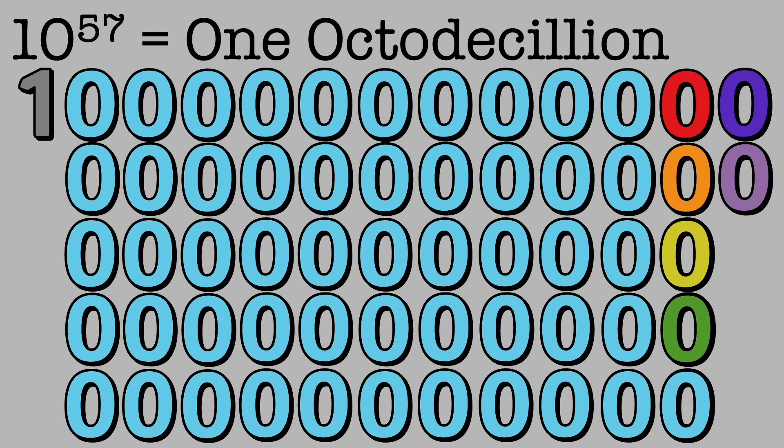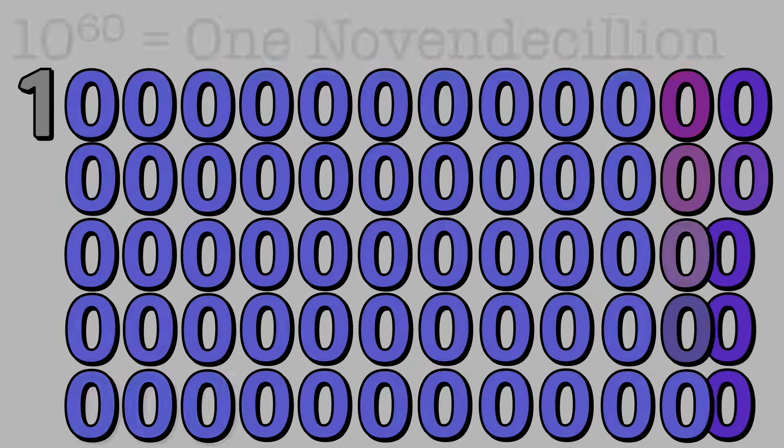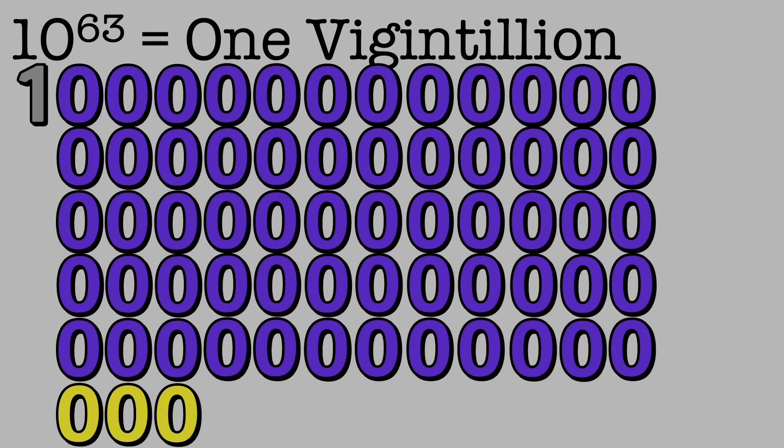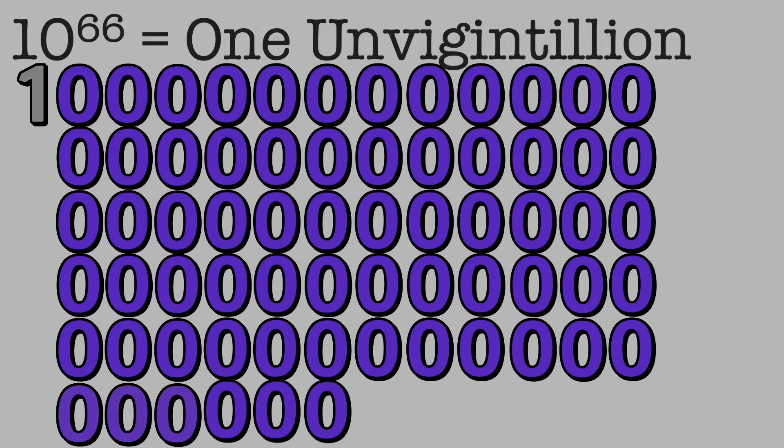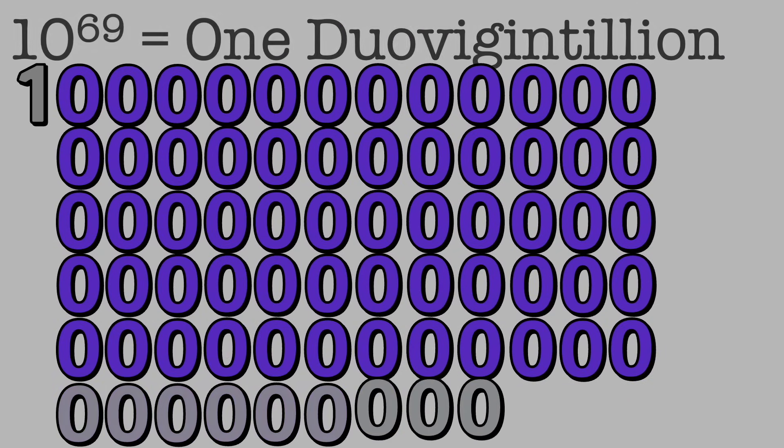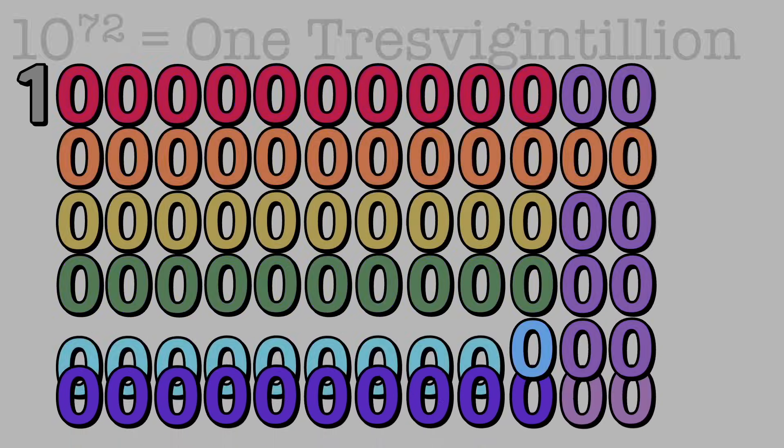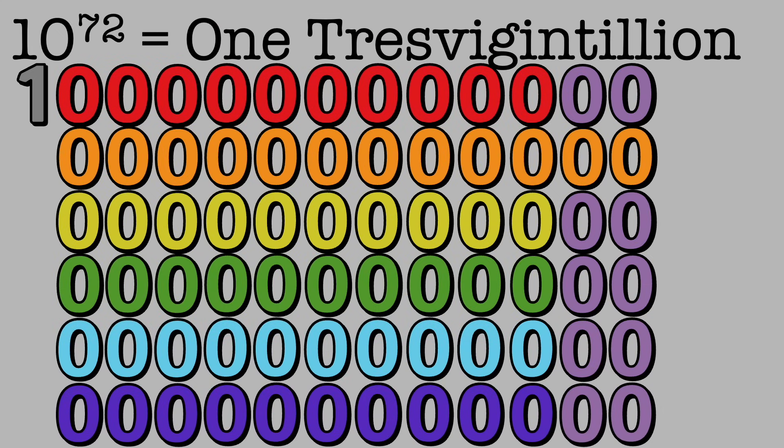We have over 57 zeros now. 1 novendecillion, 1 vigintillion, 1 unvigintillion, 1 duovigintillion, 1 tresvigintillion. We have over 72 zeros now. The numbers have rainbow colors.